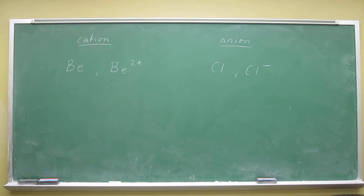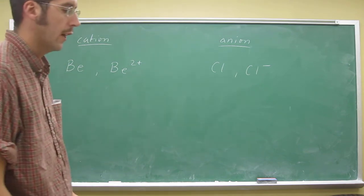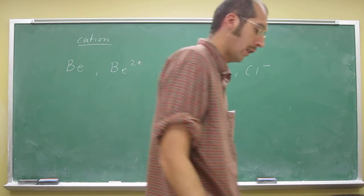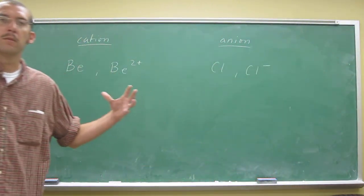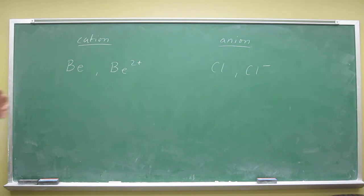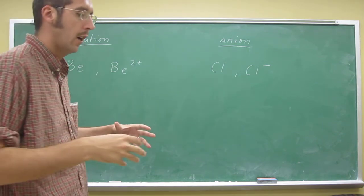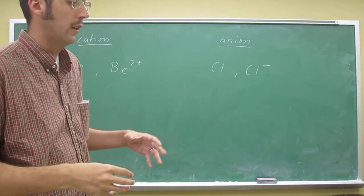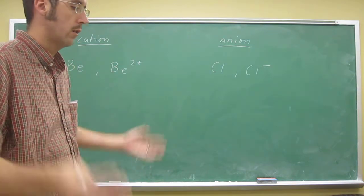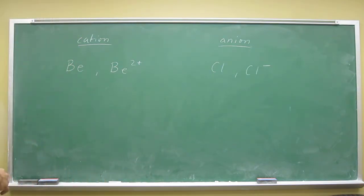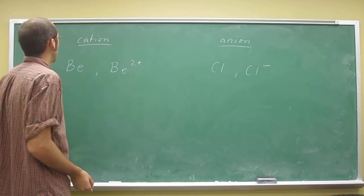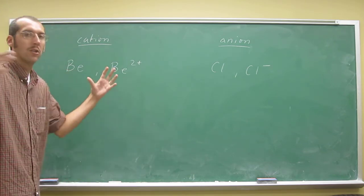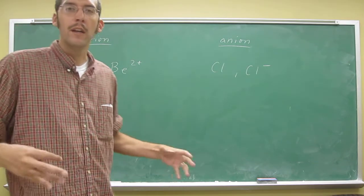When you've got a nuclear charge that's greater than your electronic charge, of course, the nucleus is going to have a stronger effect on the electron cloud than it would if the charges were equal. So in other words, we've lost some electrons, so the nucleus has a much stronger pull on the remaining electrons.